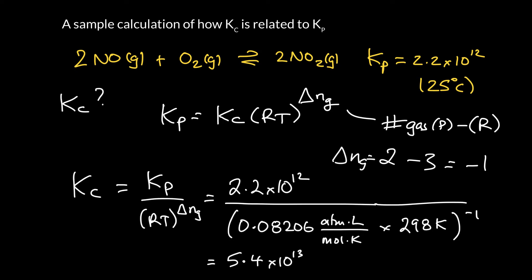Which makes sense, because the equilibrium right up here in terms of pressures is very large, which means we're going to have a lot of products at equilibrium. And if we switch to a molar concentration view, then again, it should still be large. We're going to have a lot of concentration of products at equilibrium.